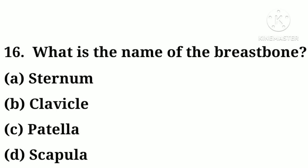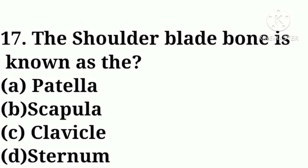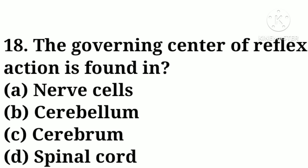Question number sixteen: what is the name of the breast bone — option A: sternum, option B: clavicle, option C: patella, option D: scapula. Correct answer: option A, sternum. Question number seventeen: the shoulder blade is known as — option A: patella, option B: scapula, option C: clavicle, option D: sternum. Correct answer: option B, scapula.